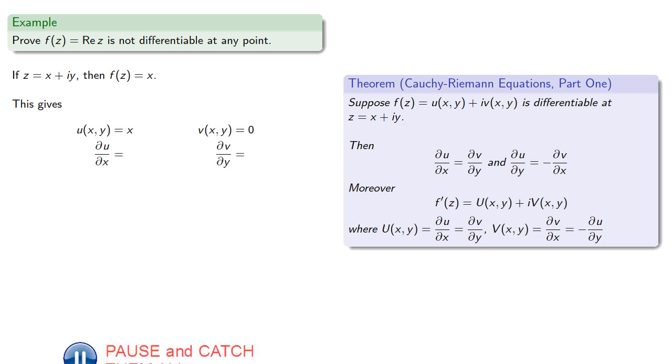Finding the partial derivatives, even if this is the biggest zero ever, these two are not equal. And so, our function is not differentiable at any value of z.